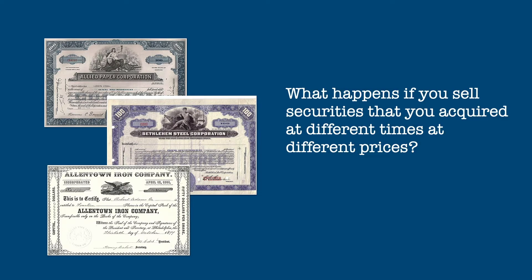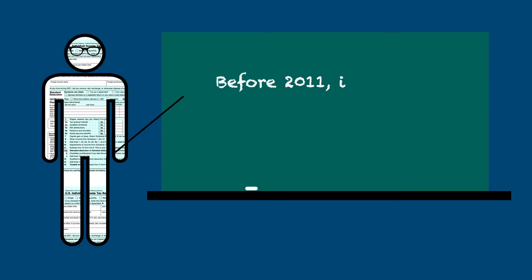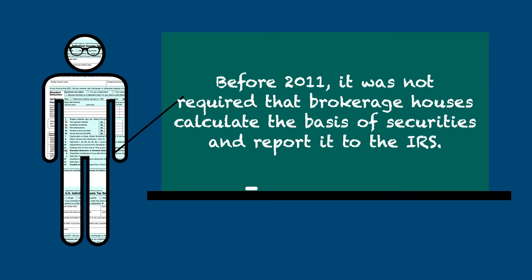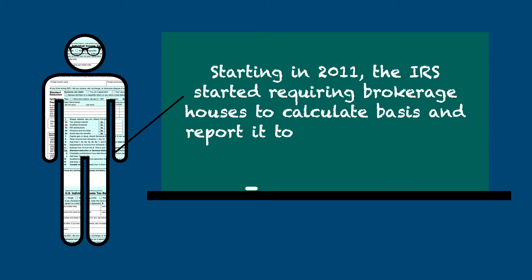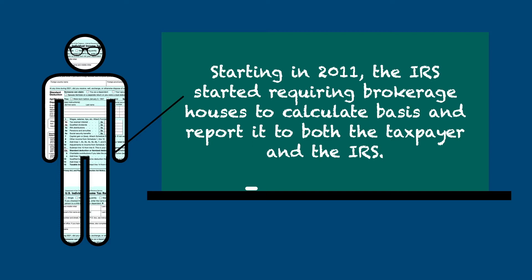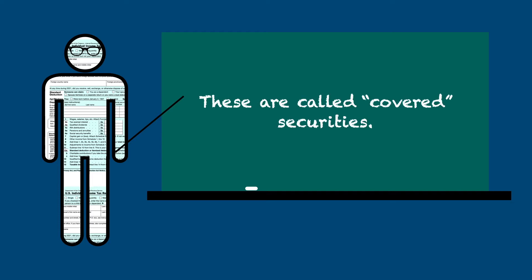Primarily the question of what happens if you sell securities that you acquired at different times, at different prices. Before 2011, it was not required for brokerage houses to calculate the basis of most securities and report it to the IRS. Instead, it was often up to taxpayers to calculate basis and report their figures to the IRS. Starting in 2011, the IRS started requiring brokerage houses to report their calculation of basis to both the taxpayer and the IRS. This greatly simplified tax reporting for taxpayers, who now had a verifiable basis to report. These securities are known as covered securities.